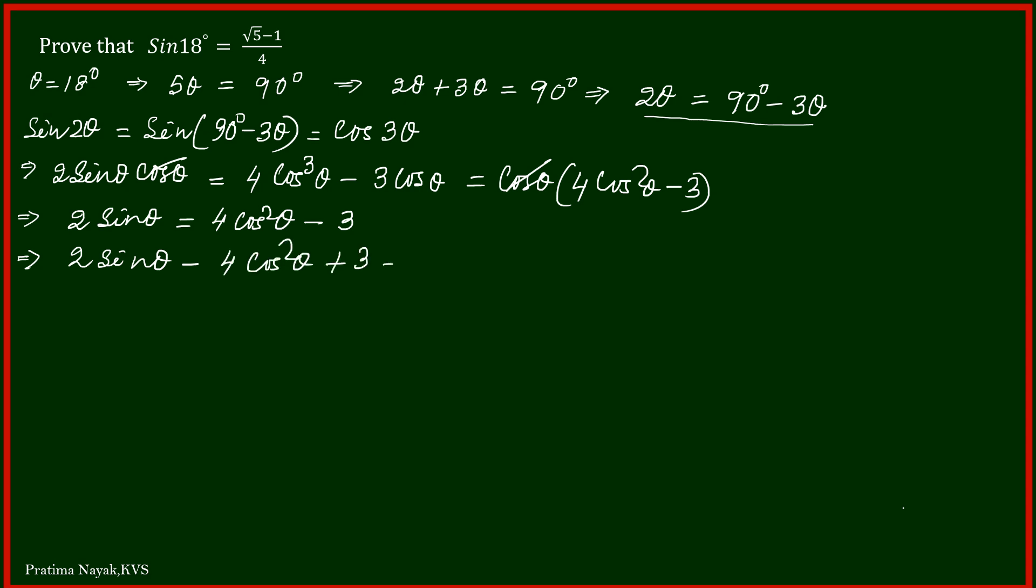In the next step we will change cos squared theta to 1 minus sine squared theta. So I will get 2 sine theta minus 4 times (1 minus sine squared theta) plus 3 equals 0.